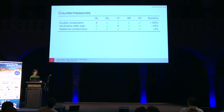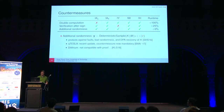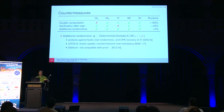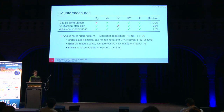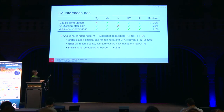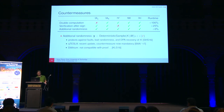A final countermeasure that protects against all our scenarios with hardly any overhead is what we call additional randomness: instead of only hashing K, M, and kappa, you also include a random bit string R. This protects against fault attacks and also guards against bad randomness — if R is set to a constant it just switches off the countermeasure — and if done correctly can also counter DPA recovery of secret K. Q-Tesla already added this countermeasure in an update after the initial publication of this work, making it mandatory, so the attacks no longer apply to Q-Tesla.